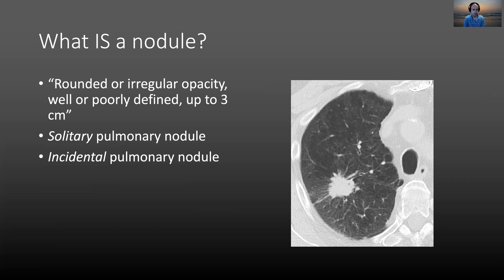You might hear the term solitary pulmonary nodule, which doesn't necessarily mean there's only one nodule in the patient, but that the nodule is isolated from other disease in the lung — it's not a diffuse lung disease. An incidental nodule is a term used when we find a nodule while the scan was done for some other purpose, like chest pain, trauma, or dyspnea. That's to distinguish it from finding a nodule when we're looking for one in a patient with known cancer, and that scenario has direct bearing on the risk of that nodule.